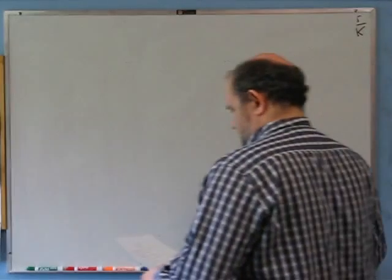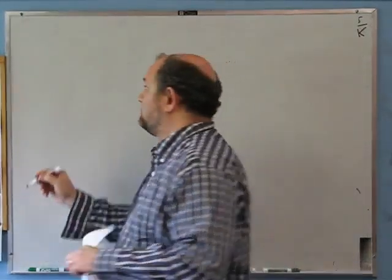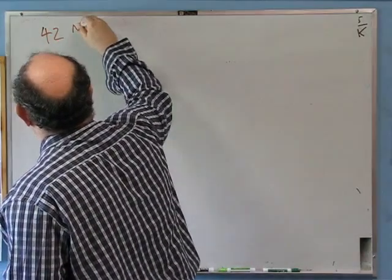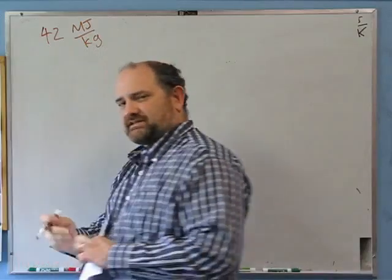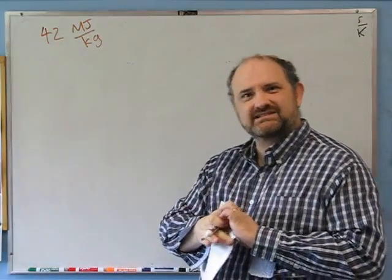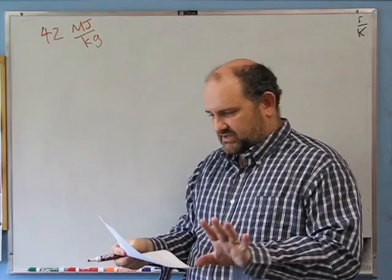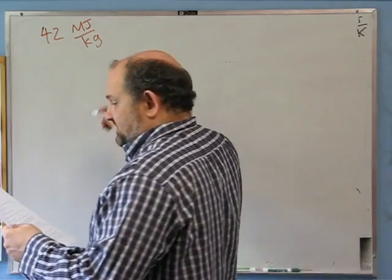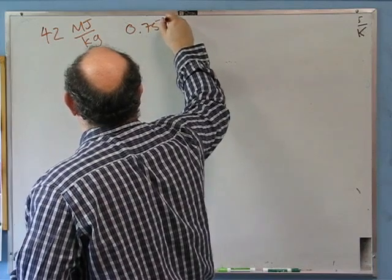The stored chemical energy in gasoline is about 42 megajoules per kilogram, if Wikipedia can be believed. That's probably right — it'll depend a little bit from one gasoline to the next, but let's go with this number. The density of gasoline is about 0.75 grams per cubic centimeter.